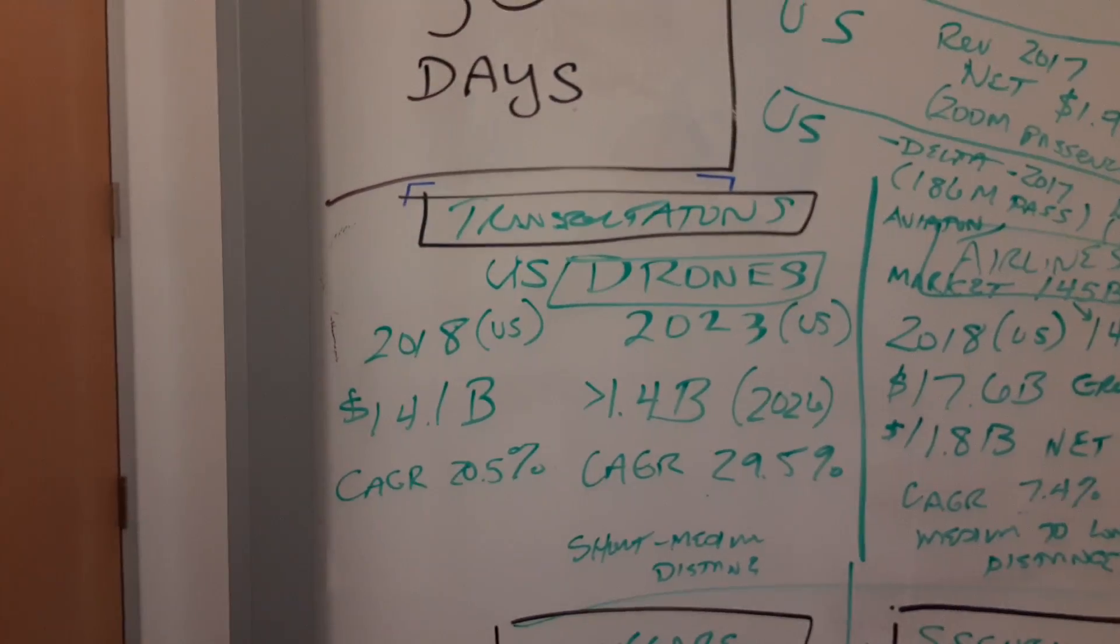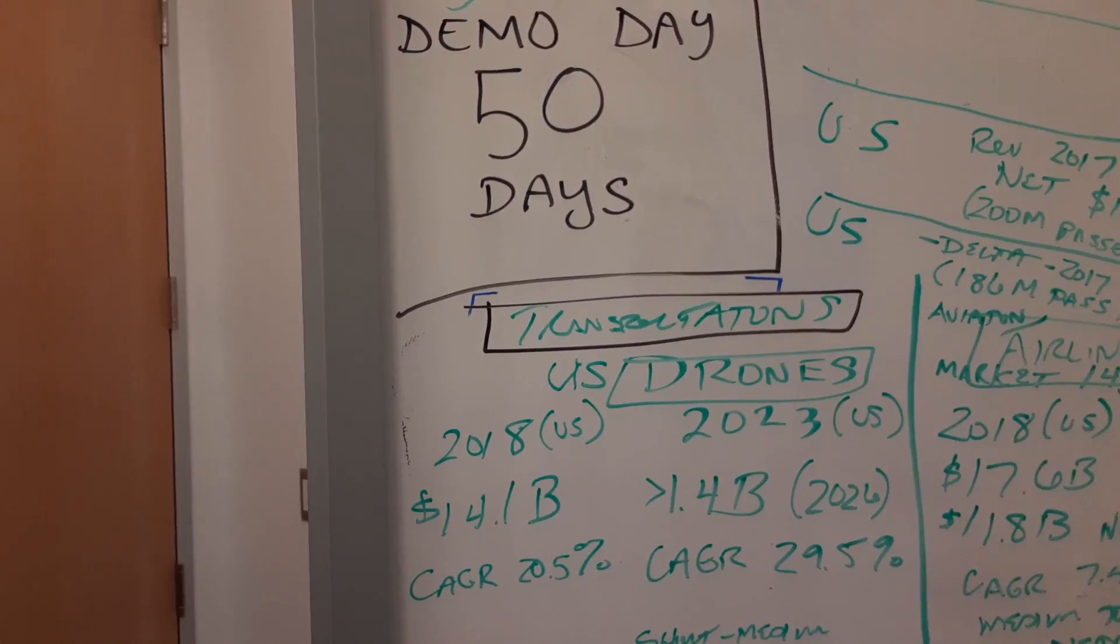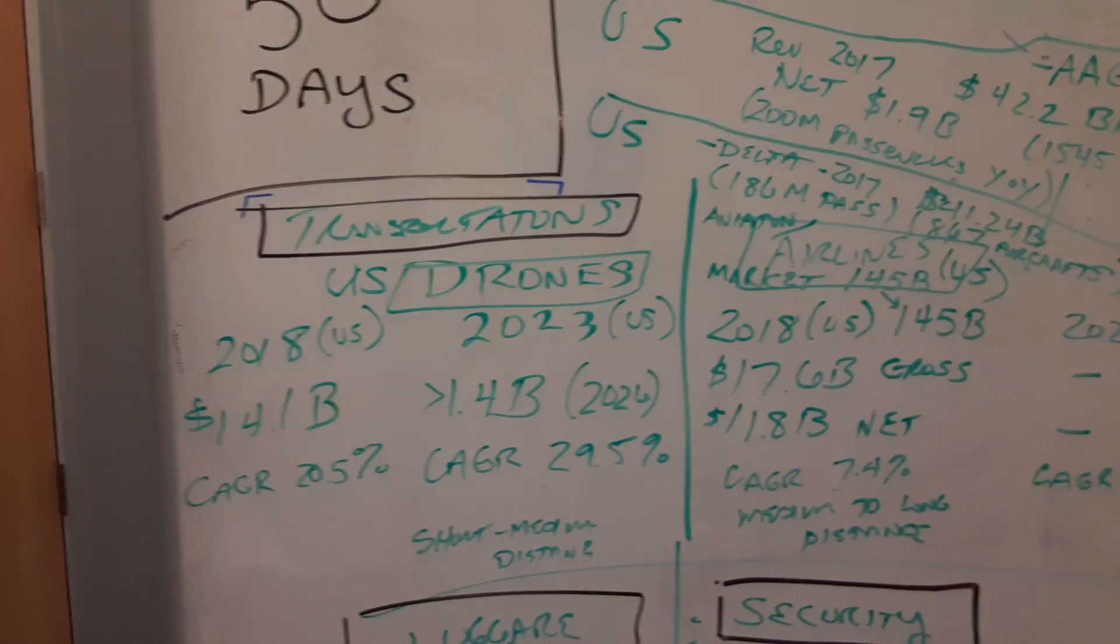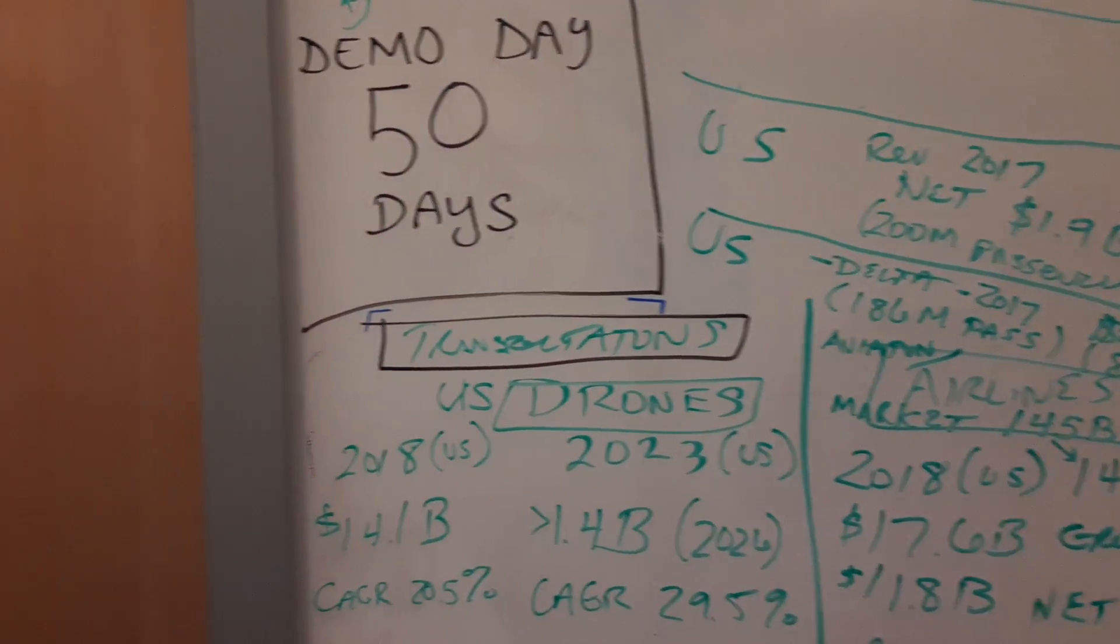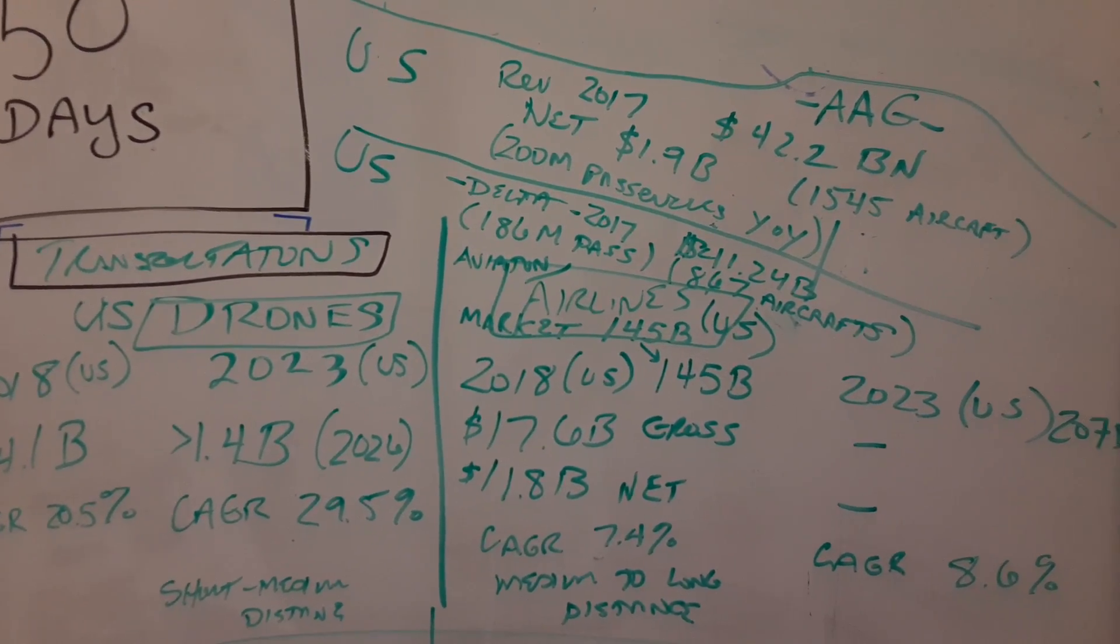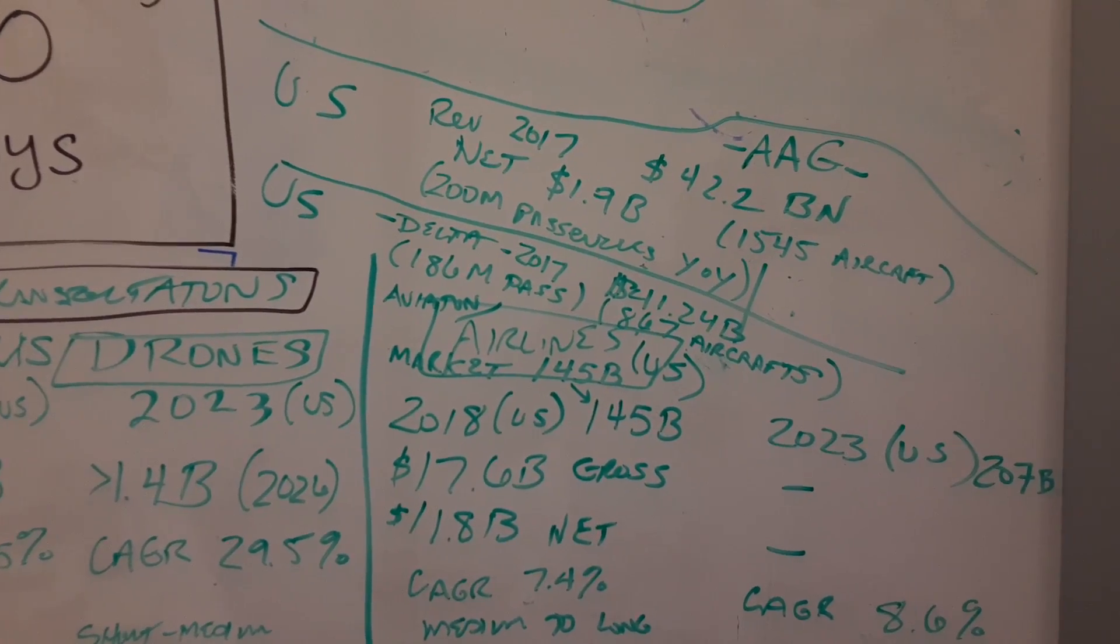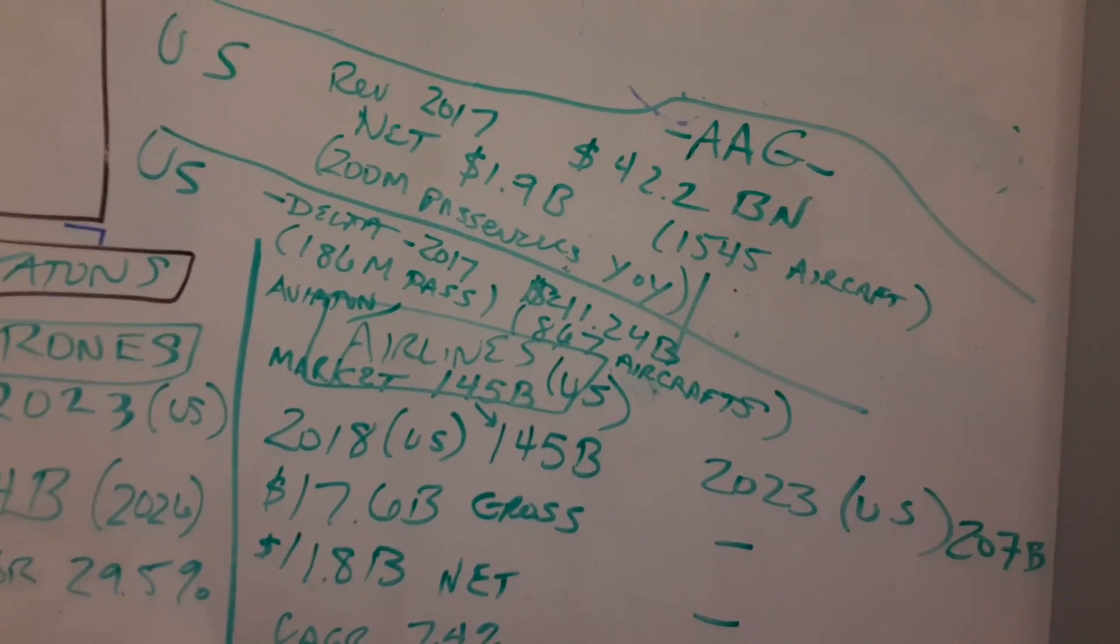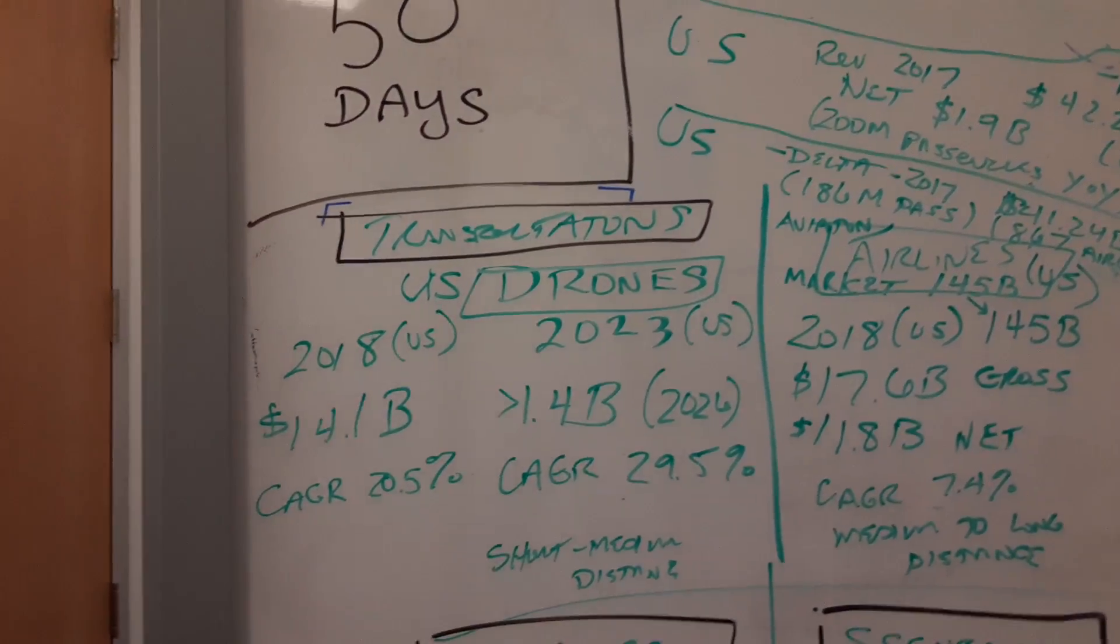The US drone one has extremely high growth, and my projections say it's going to get even higher due to the fact that the airline one is slowing down for specific reasons. Part of it has to do with the technology in the airline industry being pretty old and dated. These are very old 747s and other jets that we use for passenger aircraft.